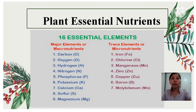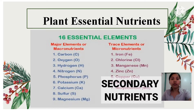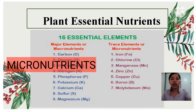First, primary nutrients, also known as macronutrients, are those usually required in the largest amount. They are carbon, hydrogen, nitrogen, oxygen, phosphorus, and potassium. Secondary nutrients are those usually needed in moderate amounts, like calcium, magnesium, and so forth. And micronutrients are required in tiny amounts, like boron, chlorine, iron, manganese, molybdenum, and zinc.